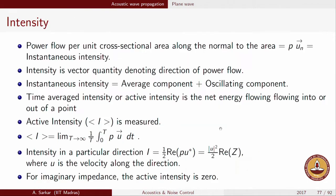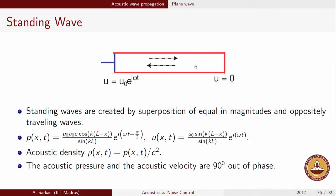Recalling the standing wave example from the rigid duct problem: a rigid duct excited by a harmonically oscillating piston. We derived expressions for acoustic pressure and acoustic velocity at every point. The pressure expression and velocity expression have a π/2 phase difference between them, which means the active intensity associated with this standing wave problem is going to be zero.